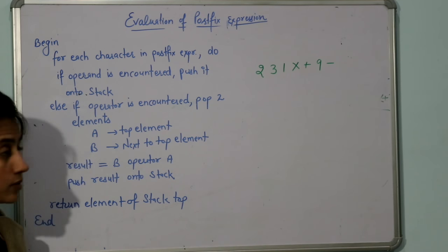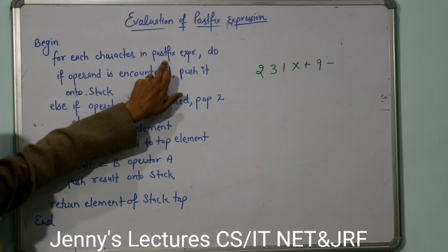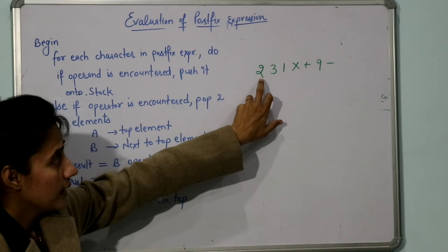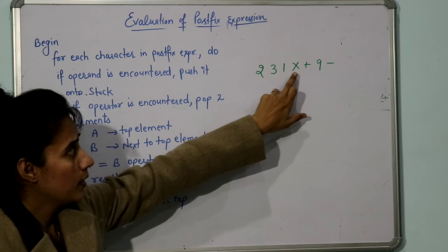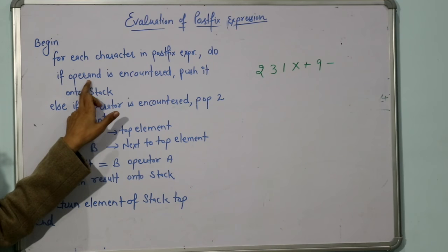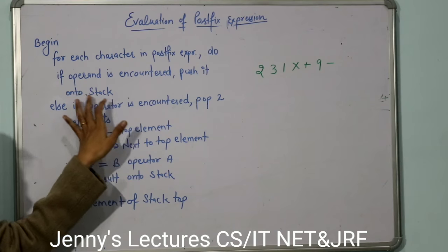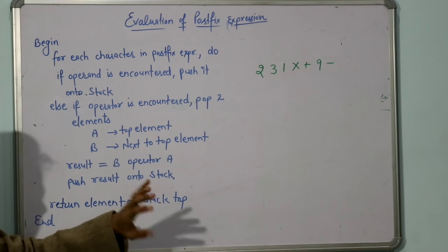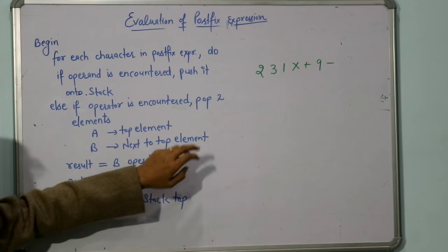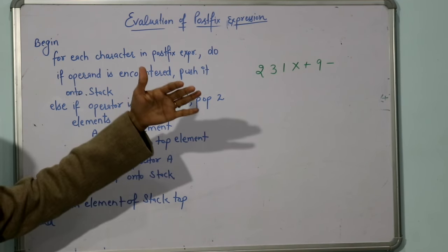So what are the steps? For each character in the postfix expression — each character means it may be an operator or it may be an operand — if an operand is encountered, then push it onto the stack. Else if an operator is encountered, then pop two elements from the top of the stack.